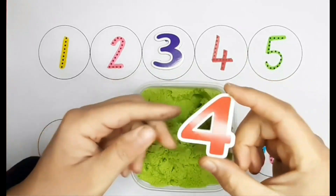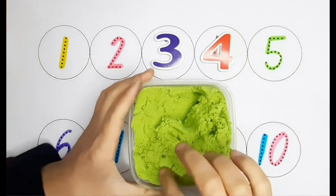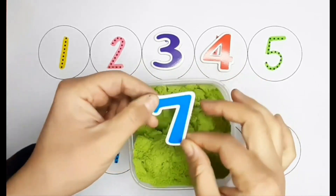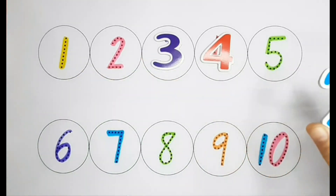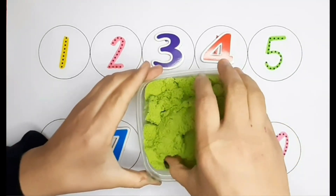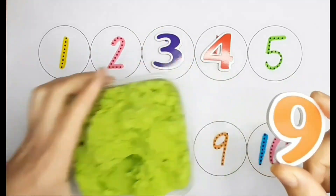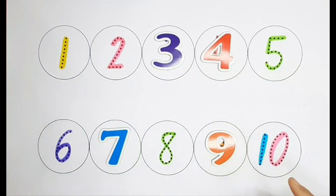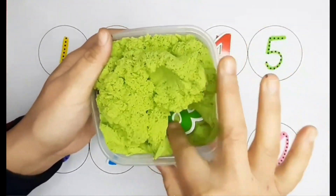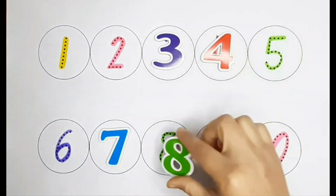Number four. Can you help me to find number 4? Yes, that's right. I wonder what next number will be. It's number 7. Let's find number 7 in the board. Yes, that's right. Let's see what number is hiding in sand. It's number 9. Let's find it. It's number 8. Let's find number 8. Yes, number 8.